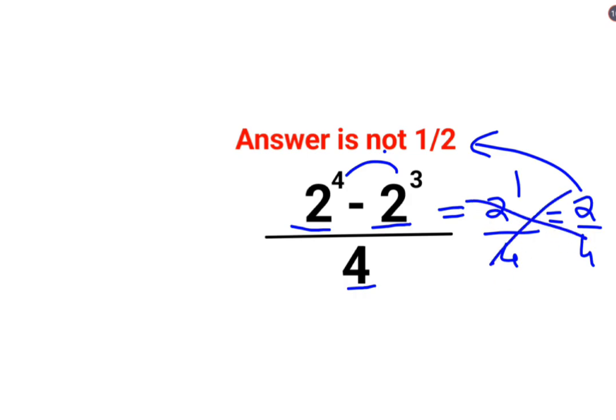The reason for that is, in indices all of these have different values. 2 raised to 4, let's calculate that. 2 multiplied by 2 multiplied by 2. We need to do this 4 times. So this is 2 into 2 is 4, into 2 is 8, into 2 is 16.